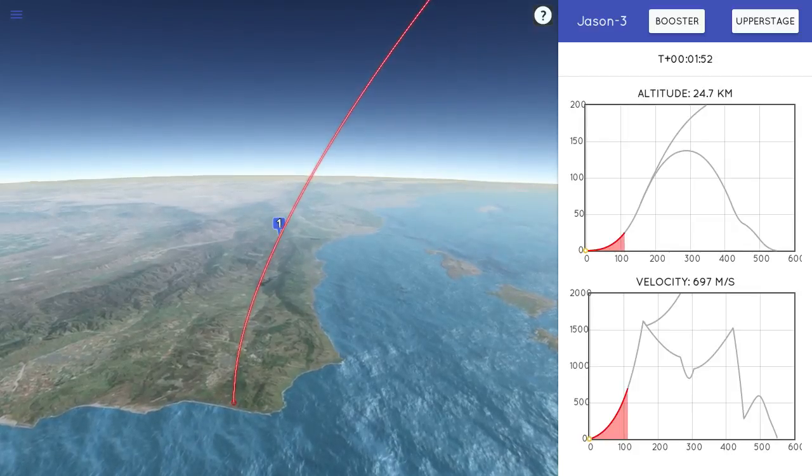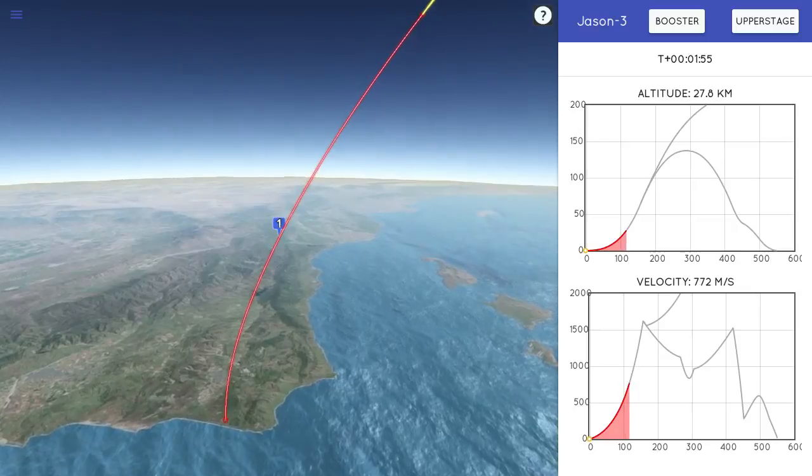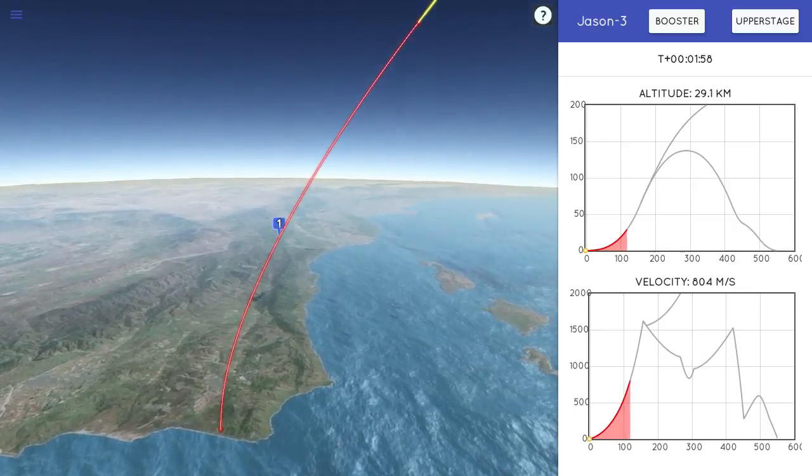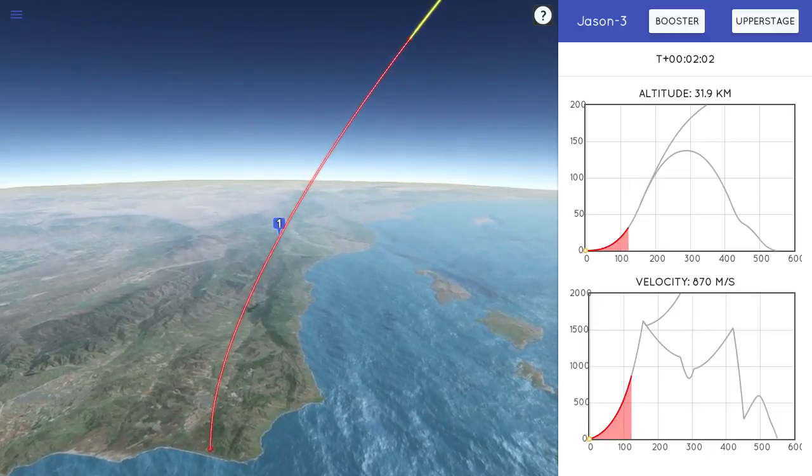And that chill has started. They have begun chilling the Merlin vacuum engine, flowing liquid oxygen through it. And that is actually a view from the thermal imager on the left side of the second stage. Vehicle is supersonic.